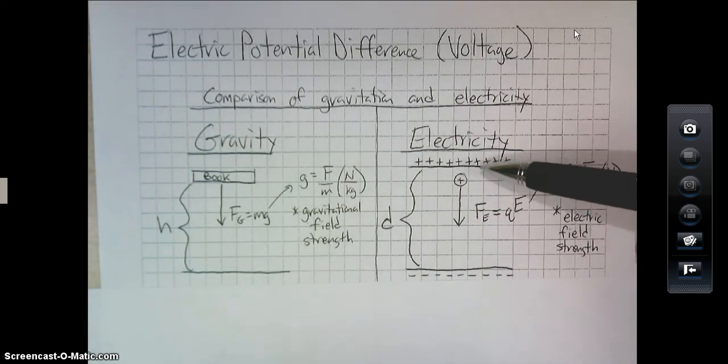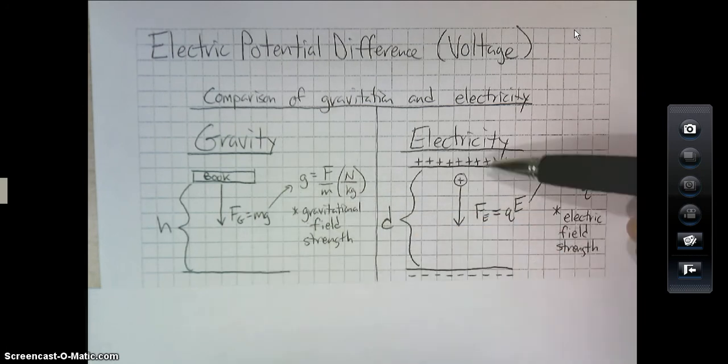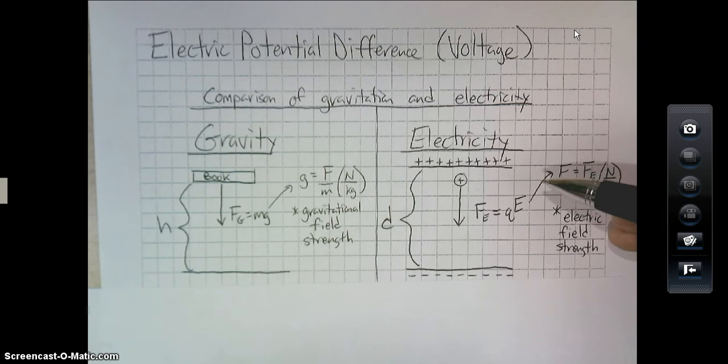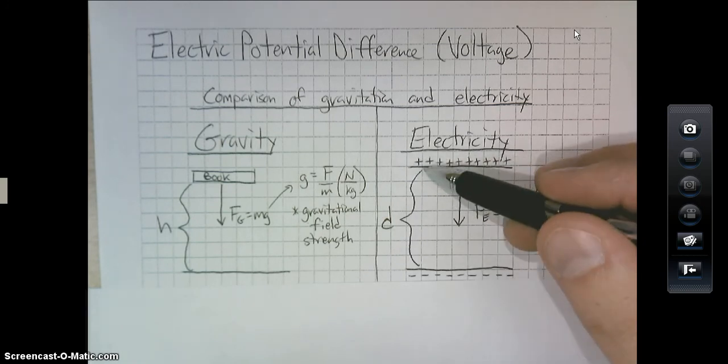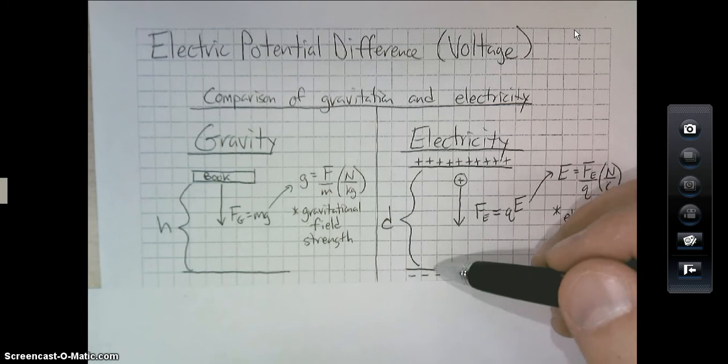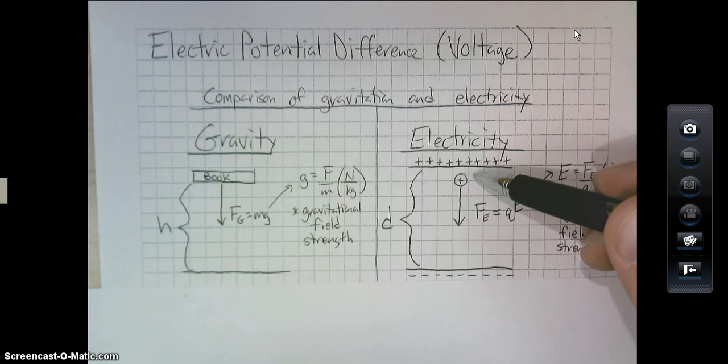With electricity, we're not worrying about material objects like books and the earth and stuff like that. We're dealing with charges. Now, right off the bat, just so that you're aware, charges get the symbol Q, little Q. So this is a positive charge, and it's being placed in between a plate of positive charges and a plate of negative charges. This is essentially the basis for like a battery.